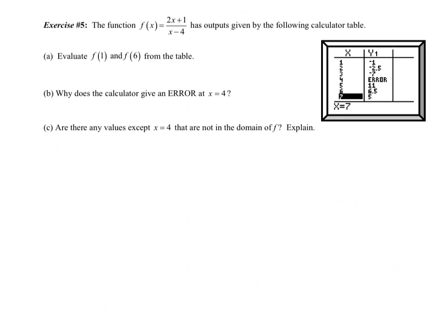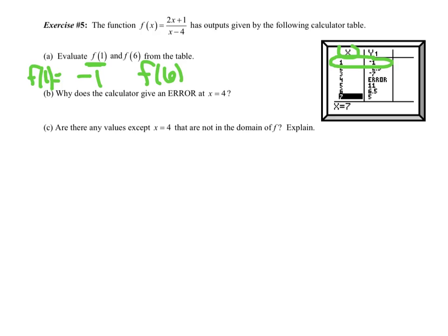Exercise 5. The function f(x) = (2x + 1) / (x - 4) has outputs given by the calculator table — I put this in y equals and went to my table on the calculator. Evaluate f(1): when I plug 1 into x, my output is negative 1, so f(1) = -1. For f(6): when I plug 6 in, my output is 6.5.